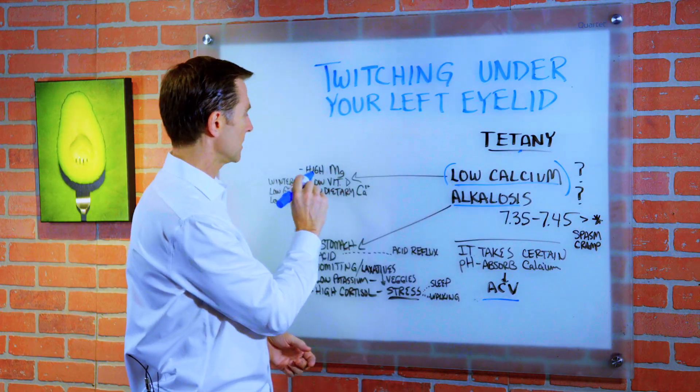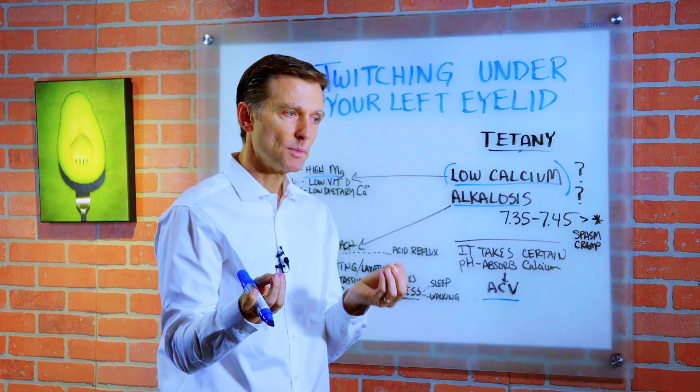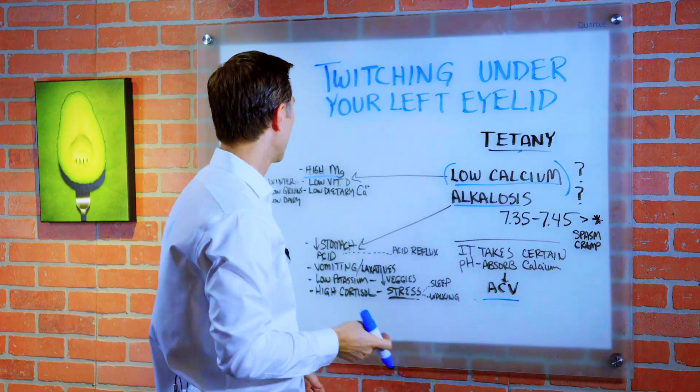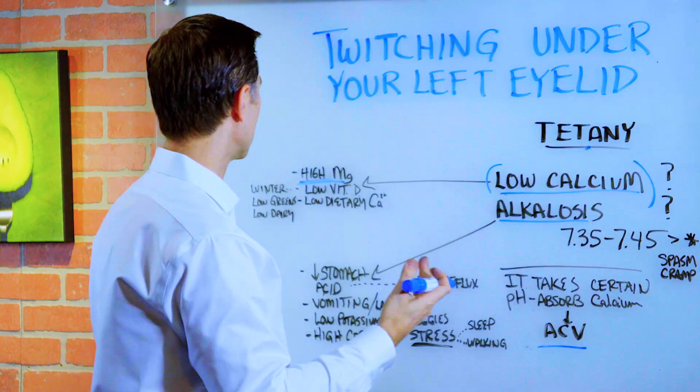So what can cause low calcium? Well, taking too much magnesium. Because calcium and magnesium work together. So if you take too much of one, the other one actually goes down. Maybe you're taking Epsom salts. It could be any number of things.